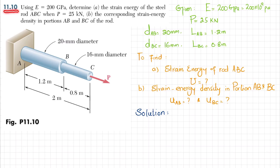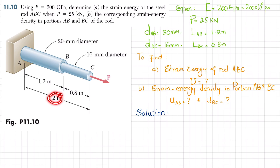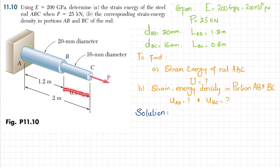Welcome back. Problem 11-10. The statement is: using E = 200 GPa, determine the strain energy of the steel rod ABC when P = 25 kN, and in part b, the corresponding strain energy density in portions AB and BC of the rod. The total length of rod ABC is 2 meters. Rod AB has a diameter of 20 mm and rod BC has a diameter of 16 mm. The length of AB is 1.2 m and the length of BC is 0.8 m. Load P is applied at the end of rod BC.